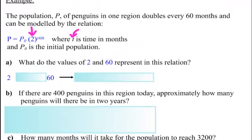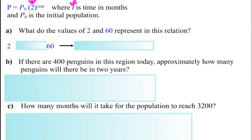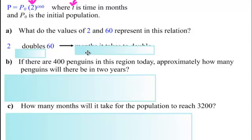And P0, as you know, is the initial population, just like the other videos showed before. It says, what do the values 2 and 60 represent in this situation? Well, the 2, as you know, we already said, that means that it's there because it's doubling. Something's doubling, so it's twice as much. The 60 represents the time it takes for it to double, the months that it takes to double.